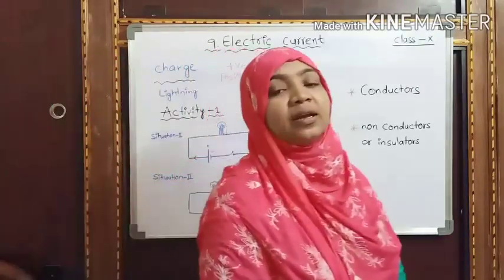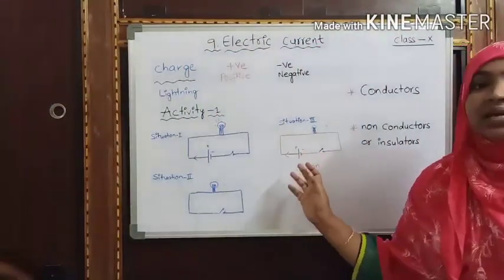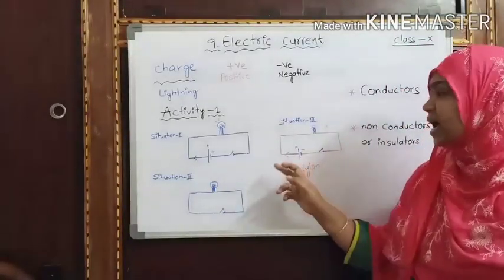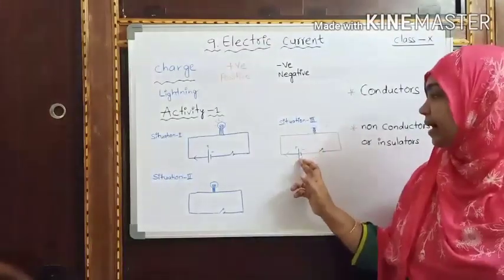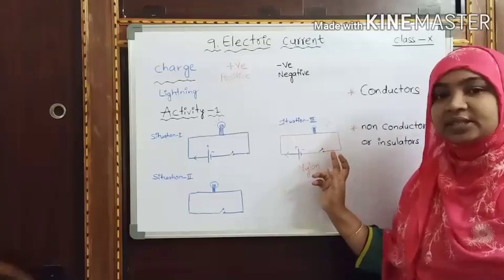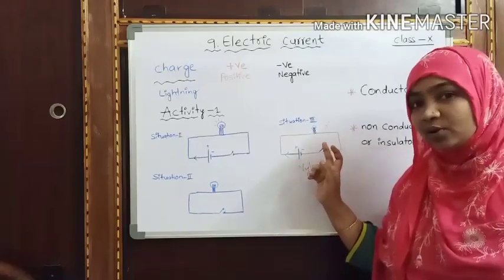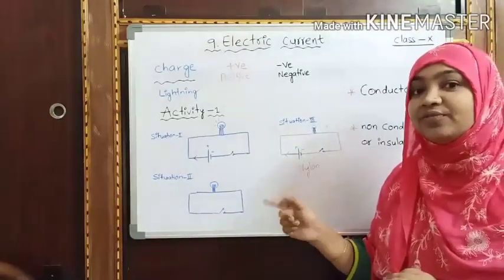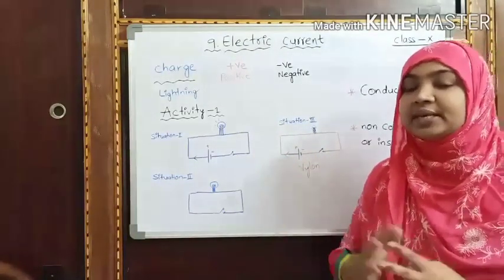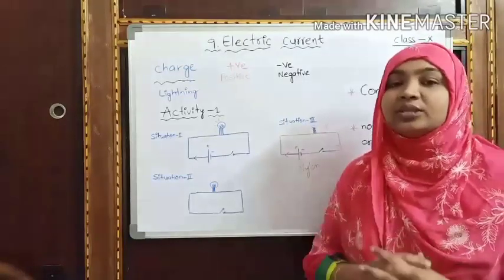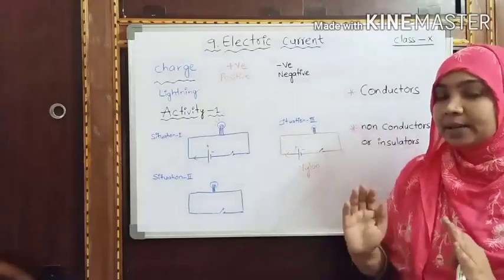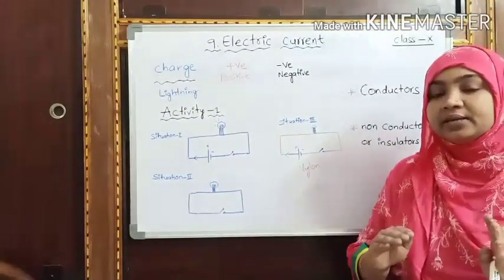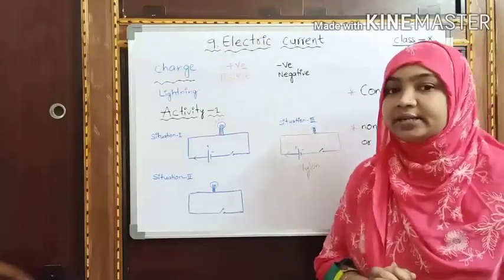In the third situation, I have replaced the copper wires with nylon wires. All other components — battery, bulb, and switch — are the same. When you switch on this circuit, does the bulb glow? Obviously the answer is no, because we have taken nylon wires instead of copper wires. Nylon is a synthetic fiber; it cannot allow electricity to pass through it.